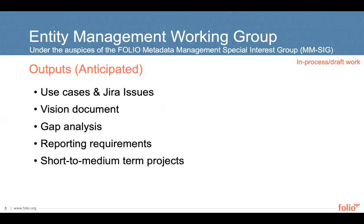We anticipate the following outputs from the group. The first output is use cases — the EMWG began by identifying use cases for our work areas, which informed and are somewhat included in the JIRA issues discussed later. The second output is a vision document that outlines the motivation behind and necessary functionality of an Entities app in FOLIO. This document will include expected entity types critical for bibliographic description, a FOLIO-focused argument for building a new application within FOLIO's environment, as well as functional requirements for that app alongside the interactions it is expected to have with other applications. This will be posted to our wiki by the end of July 2020.